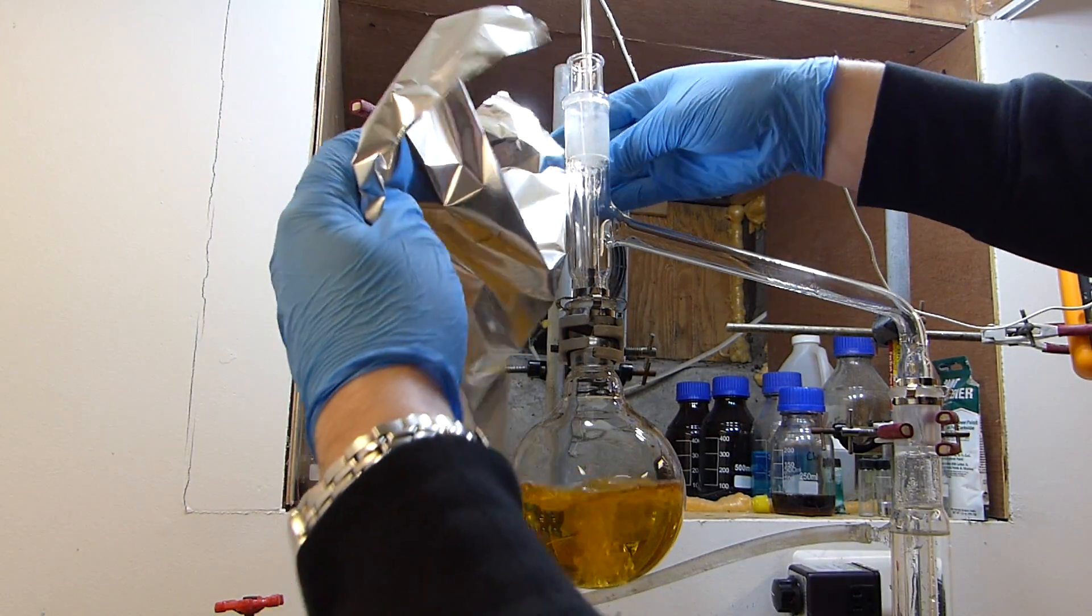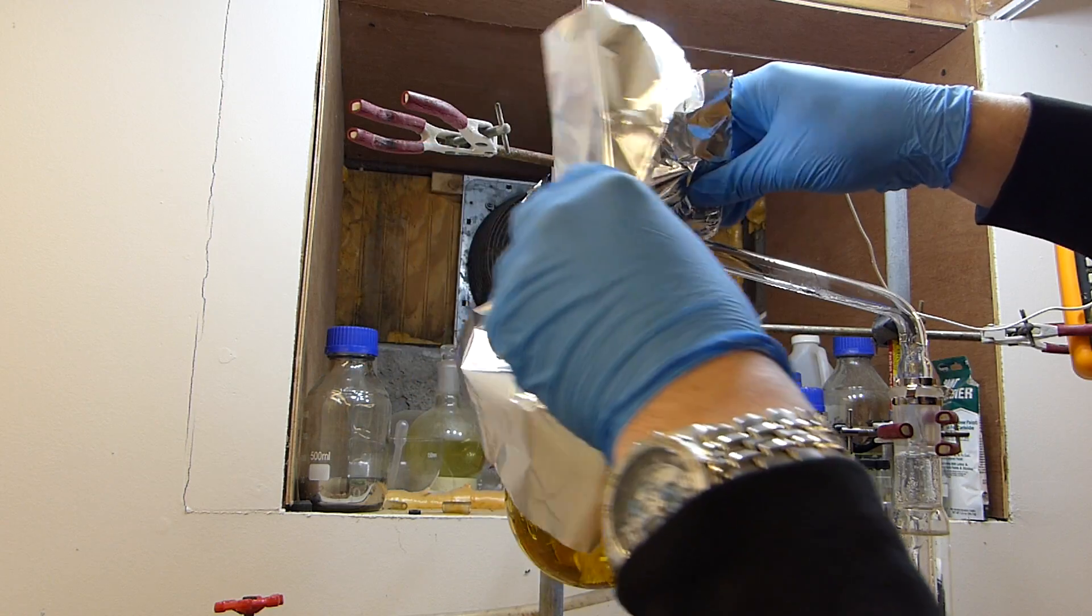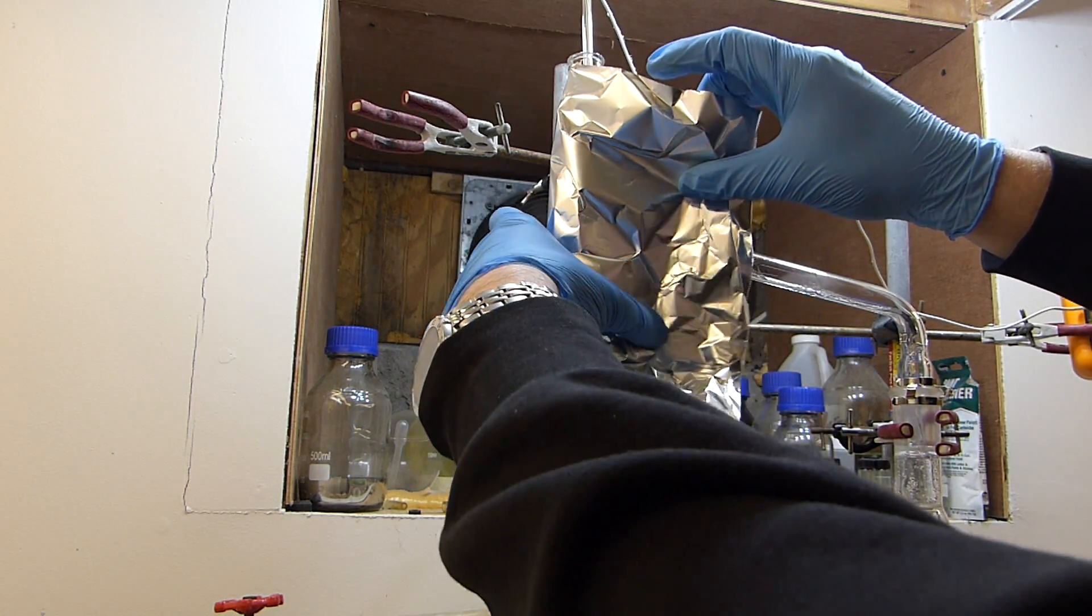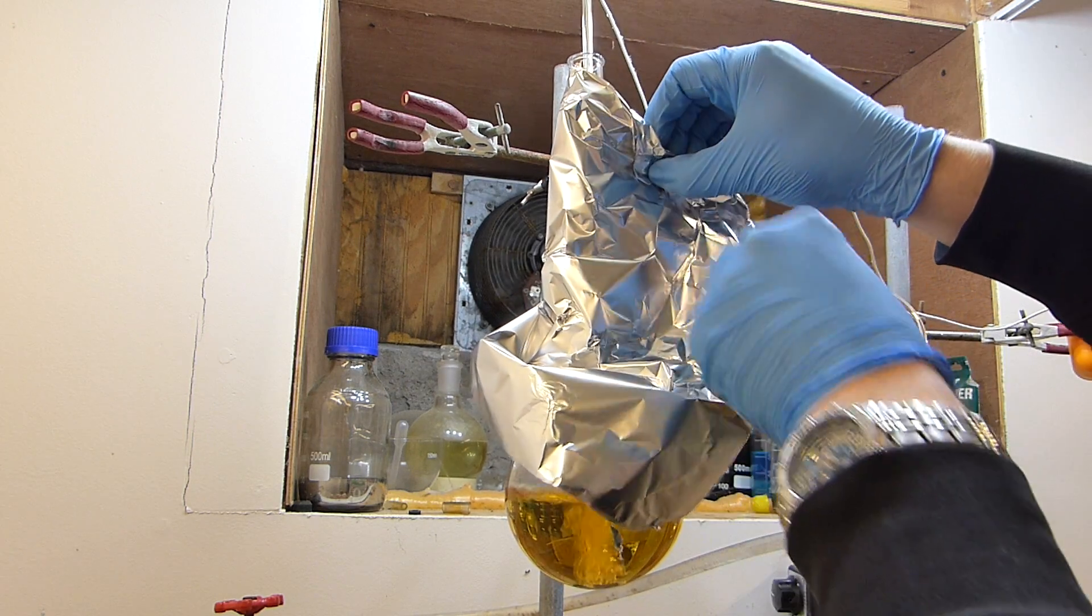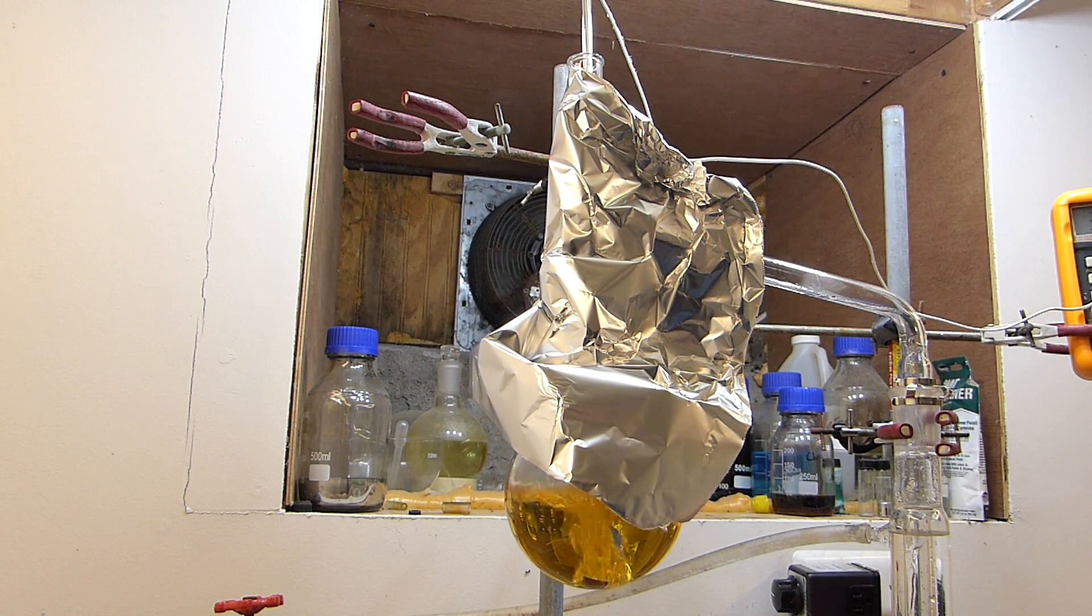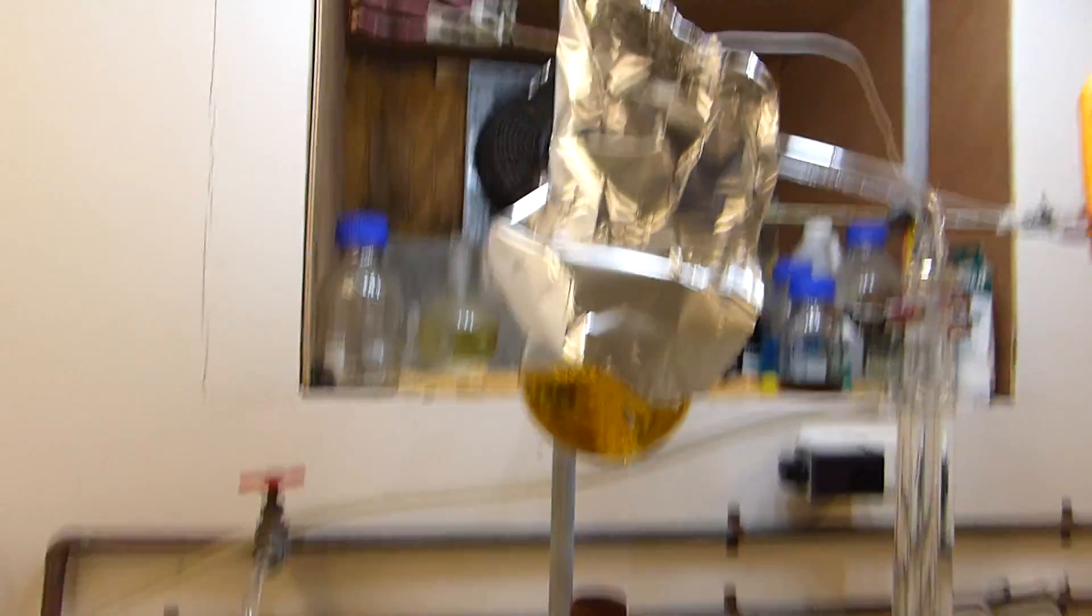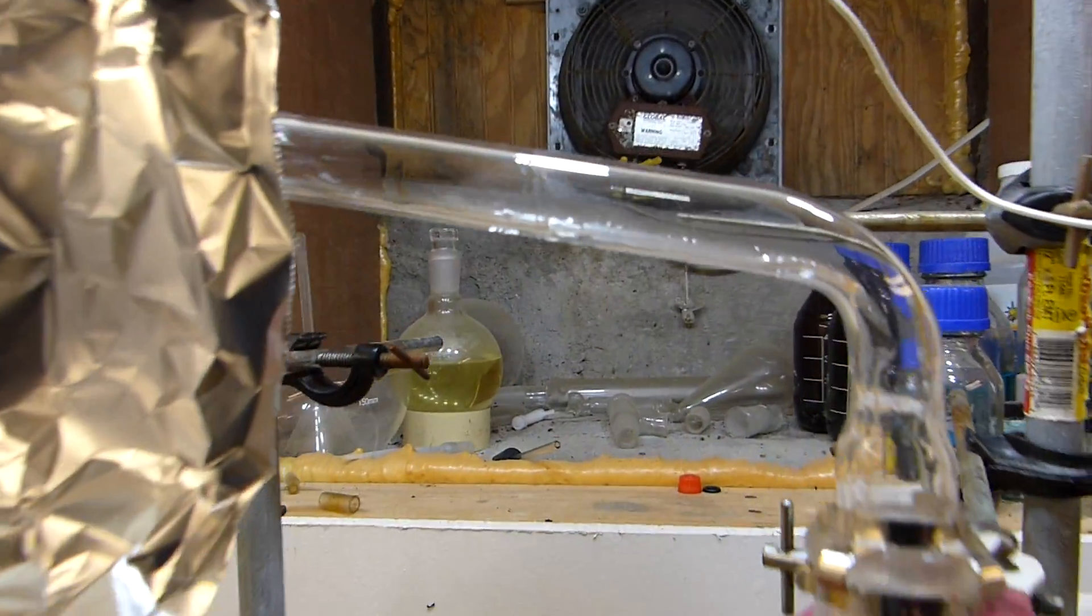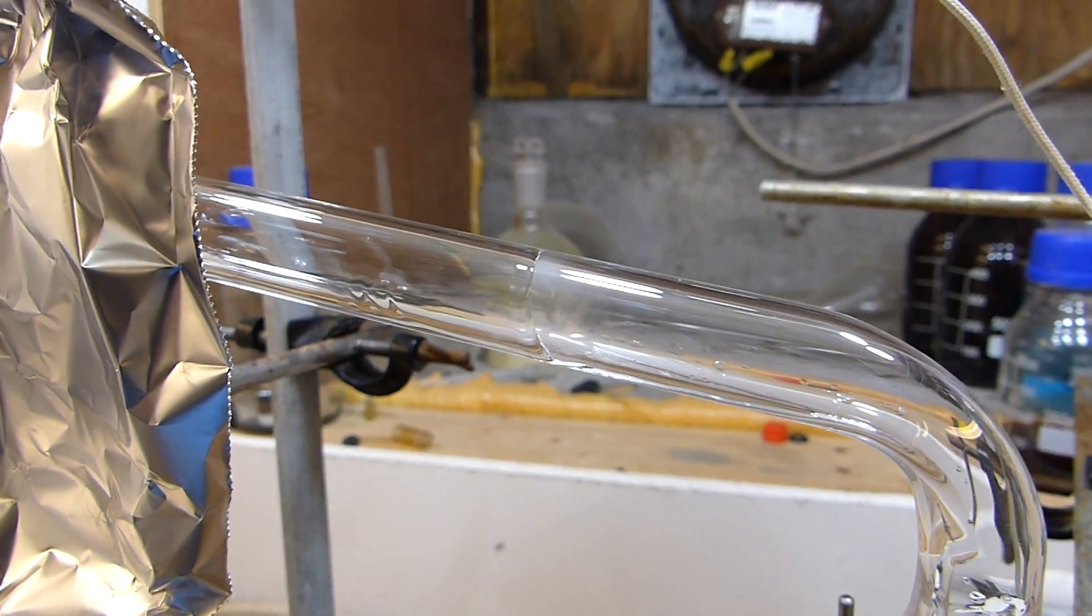So this foil is going to help keep this still head hot and prevent a lot of the reflux back into the flask that we're seeing here. Let's push this together nice and toasty. Perfect, that should really increase the rate at which we're taking acid off, and you can already see right there the syrupy acid coming over. I don't want to touch that obviously, that's 600 degrees.